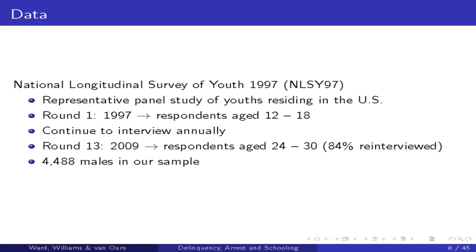Now here is the amazing, beautiful data. We're using the National Longitudinal Survey of Youth 1997. It interviews about 10,000 people. It started in 1997, where people were 12 to 18 at that point in time. They were interviewed annually. We used data up to 2009, round 13, where respondents were aged 24 to 30. We've got 4,500 males in the sample — we need big sample sizes to be able to do what this work entails. It's longitudinal; they follow it every year.